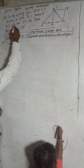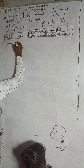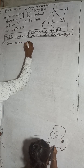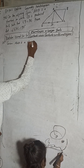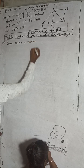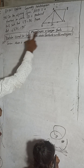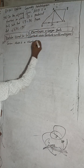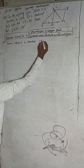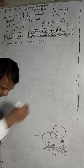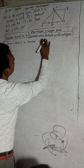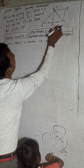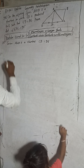Now we write the given information. Given: ABCD is a rhombus, and CD is equal to DE.